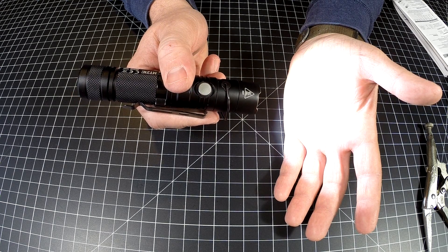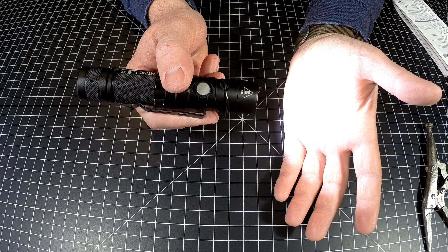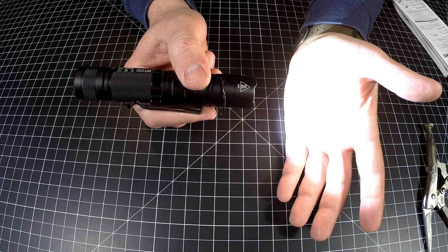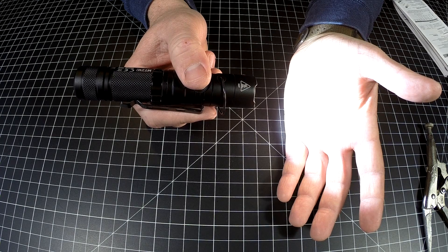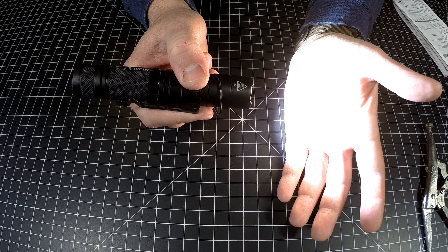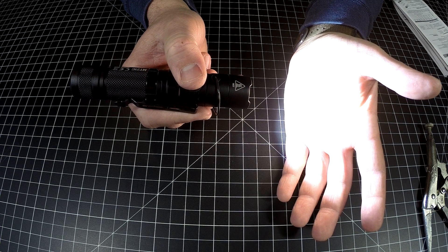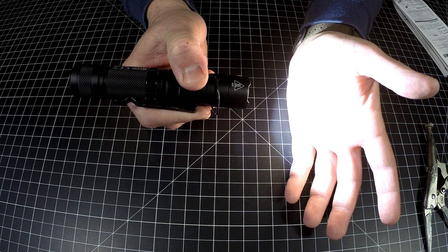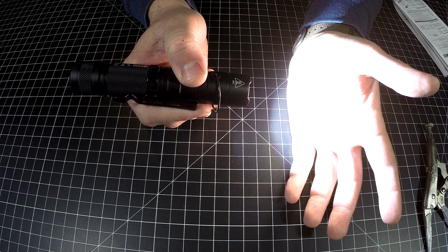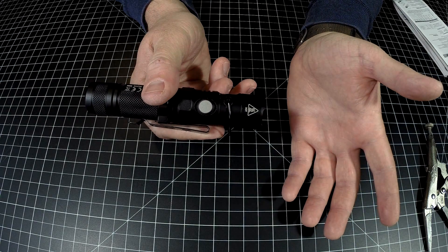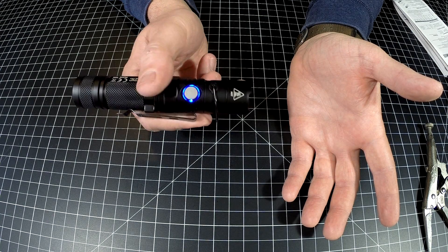This is ultra low, one lumen for about 700 hours depending on your battery. Tap to cycle through modes. This is low, 50 lumens for 25 hours. Tap again for mid setting, 190 lumens for 7 hours 30 minutes. Tap again for high, 400 lumens, 3 hours 45 minutes runtime. One more tap is turbo, 1000 lumens for an hour.